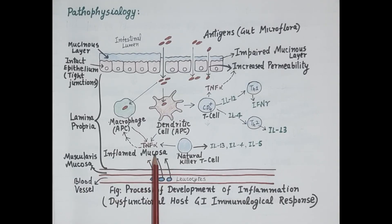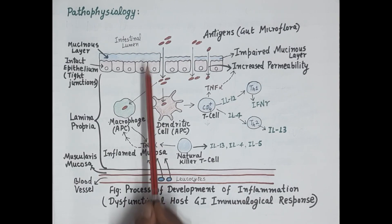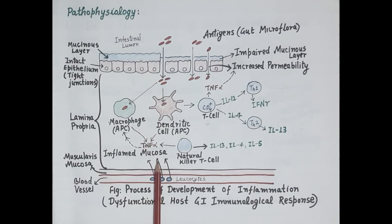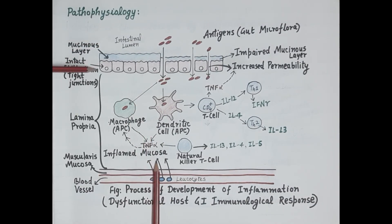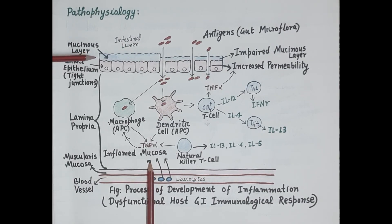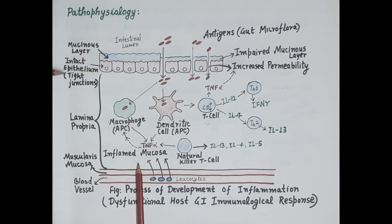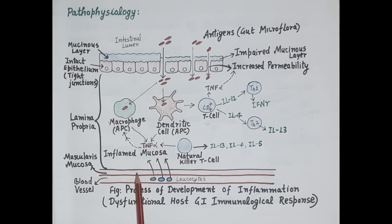Now let's discuss the pathophysiology of ulcerative colitis. This figure shows how the wall of the rectum and colon first gets inflamed and how inflammation leads to ulceration. The intestinal lumen is on one side, and the wall of the colon contains the innermost mucosal epithelium, which is protected by a mucinous layer — a layer of mucus that protects epithelial cells and regulates tight junctions. Below the epithelium is the lamina propria, then the muscularis mucosa, and associated intestinal blood vessels.